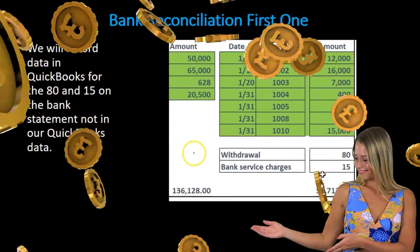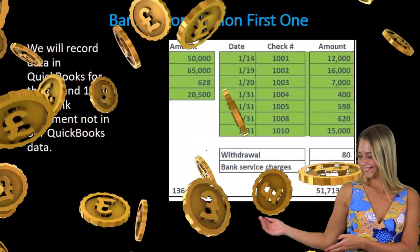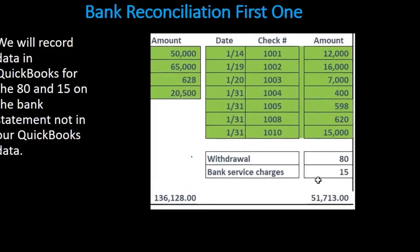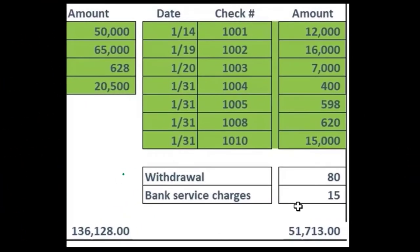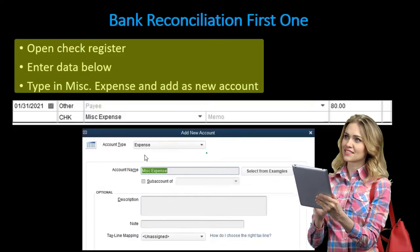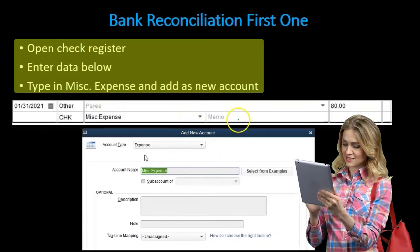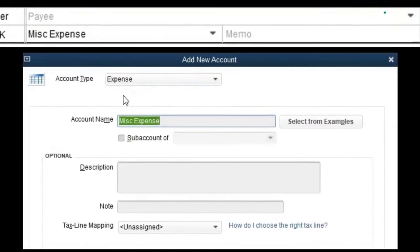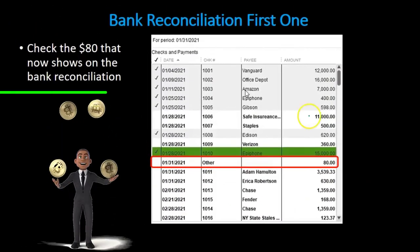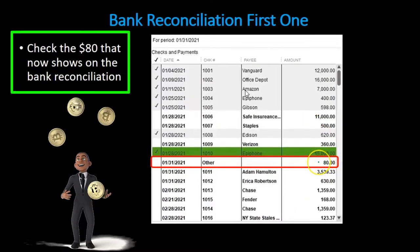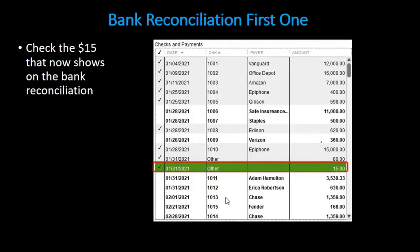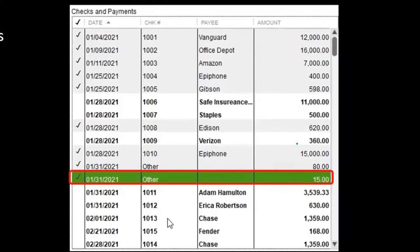Once done, we identify anything that's on the bank statement but not on the books. In this case we have two items on the bank statement not on the books. When working with QuickBooks we would make an adjustment — go into the account, into the check register, and enter the data for anything that's on the bank statement but not on our books. We enter that data and then check that item off. The bank service charges would also go to the check register, enter that data, and check it off.